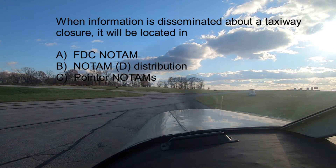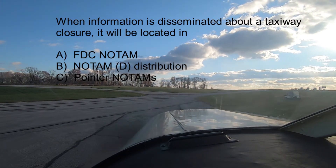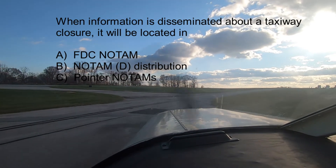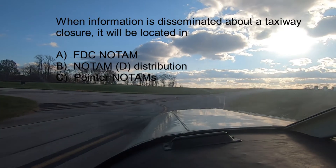Question number one: when information is disseminated about a taxiway closure, it will be located in A) FDC NOTAMs, B) NOTAM D distribution, or C) pointer NOTAMs? The answer is B, NOTAM D distribution. Remember, NOTAM D is for all navigation facilities that are part of the airspace system and all public use airports. NOTAM D text can include information for the runway, taxiway, ramp, apron, aerodrome beacon, or any services affecting the airport. It could also affect the local area — like an obstruction tower being built or a light out on a tower — or it could be tied to something in the surrounding airspace, or a notice regarding a COM or NAV frequency.